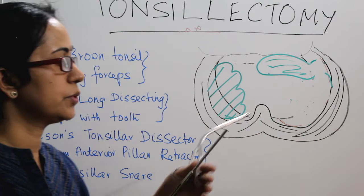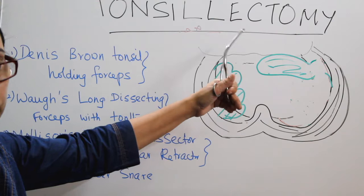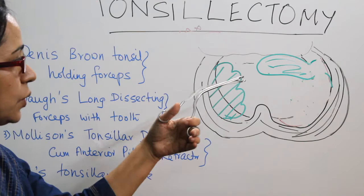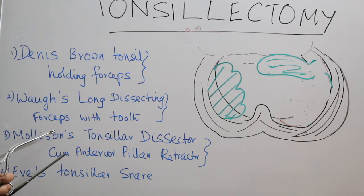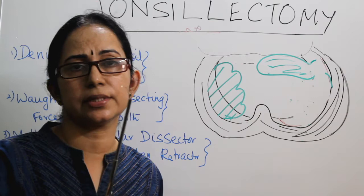You have to remember the stainless steel wire and the advantages of the Eve's tonsillar snare — these will be asked in viva. So in summary, tonsillectomy by dissection and snare method involves: holding the tonsil with Dennis Browne forceps, putting the incision with Waugh's long dissection forceps with tooth, dissecting with Mollison's dissector, and finally using the Eve's tonsillar snare to remove the tonsil at the lower pole. The procedure is then repeated on the other side.